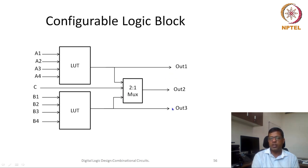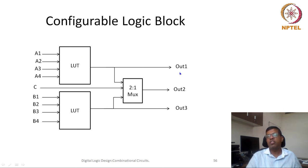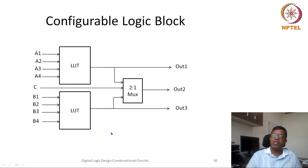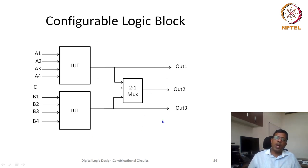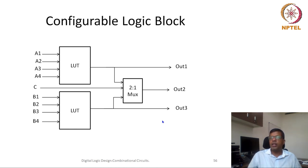That 16×1 memory stores the truth table content of the function you would like to execute, plus there is a mux which gives output based on whatever is the input. This CLB block has two LUTs, both with four inputs, and there is a mux. It can have two or three different outputs. This CLB can implement two functions of four inputs each, or a five-input function, or some selected nine-input functions. The idea is that you feed the content of your truth table into the lookup table memory, and this lookup table gives you the output corresponding to the function you would like to design or program.